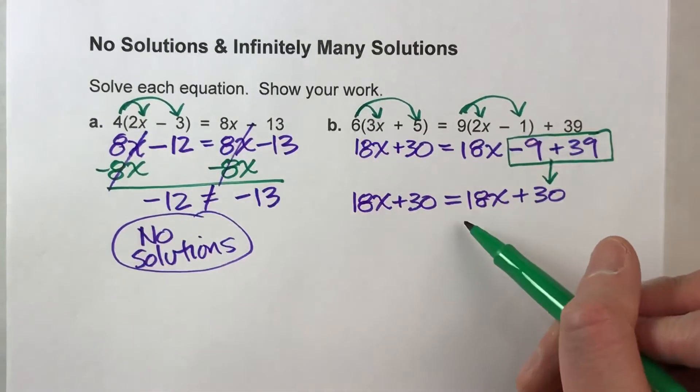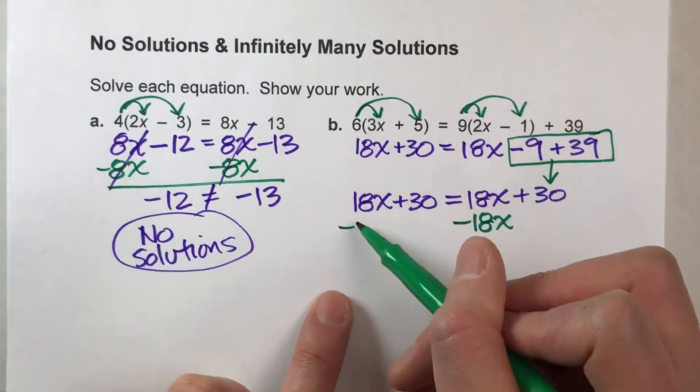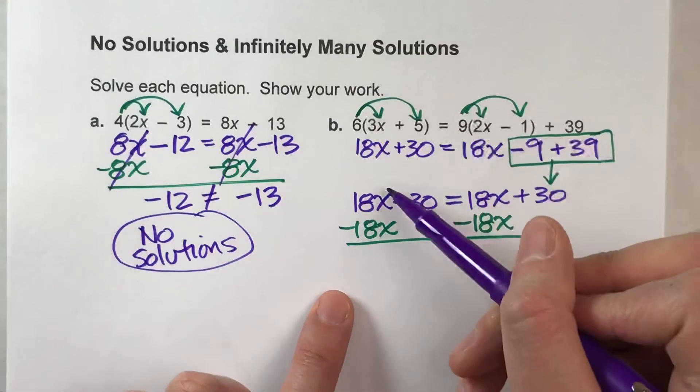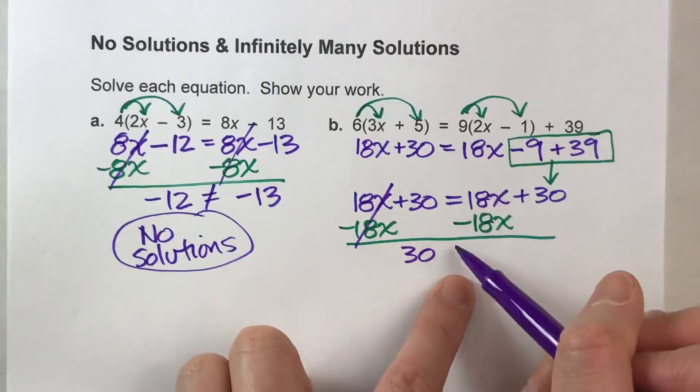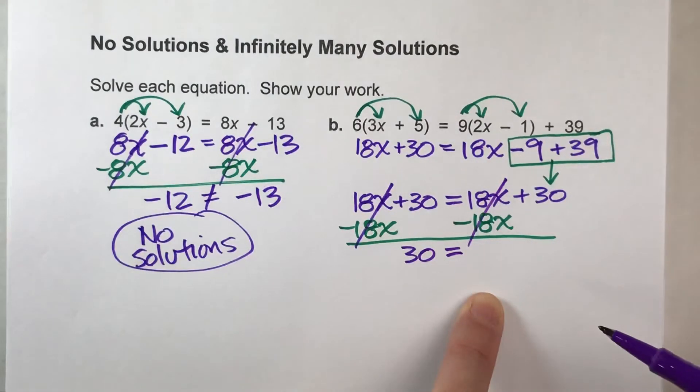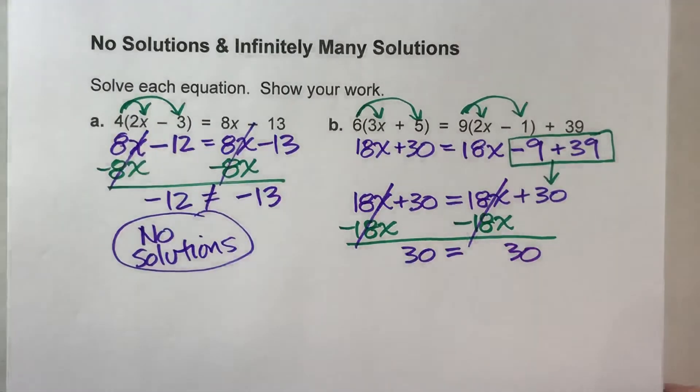We've got x's on both sides. I'm going to subtract 18x. What I do to one side, I have to do to the other. When I do that, the 18x's undo each other, but all that's left here is 30. Drop down my equal sign. On the other side, these 18x's undo each other, and all that's left over here is also 30. So notice,